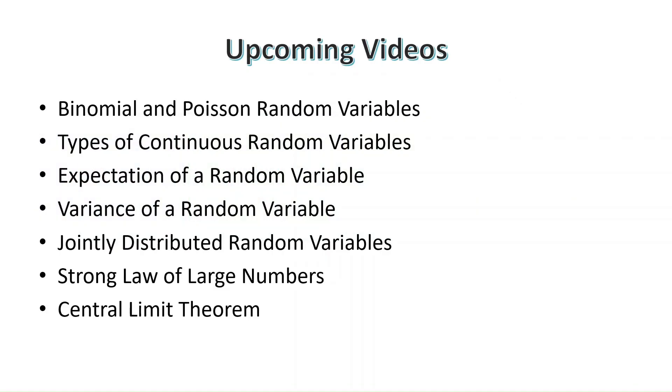In the upcoming videos in this series, we're going to look at binomial and Poisson random variables, followed by different types of continuous random variables, like normal distribution. Thereafter, we'll look at the expectation and variance of a random variable, followed by jointly distributed random variables, and finally, the strong law of large numbers and the central limit theorem.